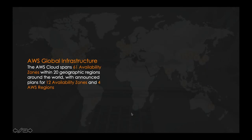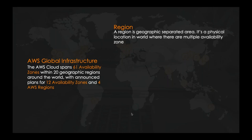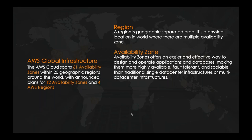The AWS cloud spans across 61 availability zones with 20 geographic regions around the world. AWS has also announced 12 more availability zones in four upcoming regions. A region is a geographically separated area — like Mumbai in India, US West, Singapore, etc. These are physical locations in the world where multiple availability zones are available. An availability zone is essentially a data center, which is an effective way to design and operate applications and databases.